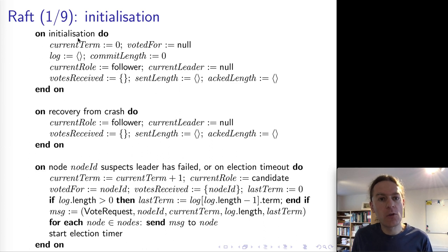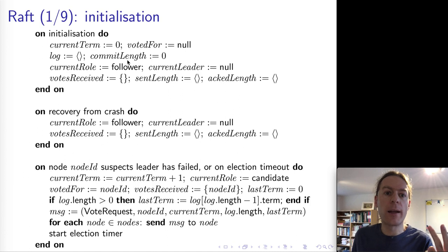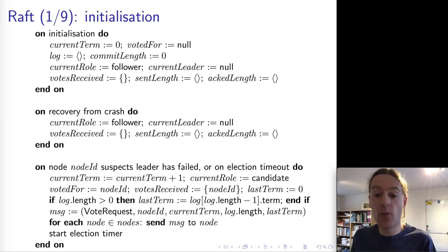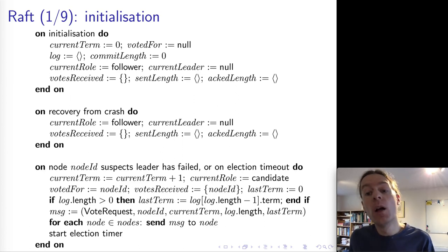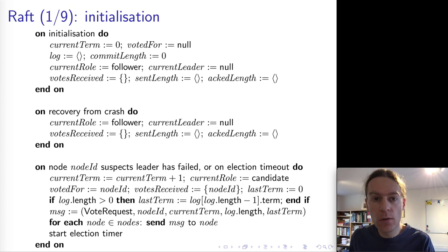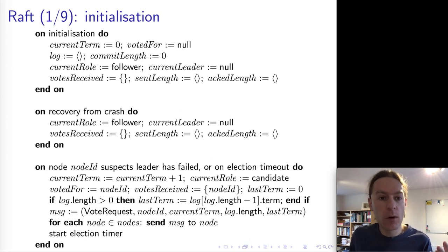The important thing is that the first four variables — currentTerm, votedFor, log, and commitLength — have to be stored in stable storage, so they have to be on disk. Whenever a node updates one of these variables, it has to write that update to disk before it does anything else, before replying to any messages. This is important for crash recovery purposes. The later variables, the ones that are not the first four, can be just in RAM — volatile memory — and their contents will be lost if a node crashes.